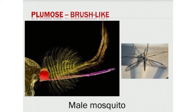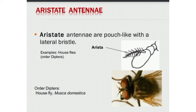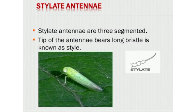Next is pilose antennae, from the female mosquito. Next is aristate antennae, which are pad-like with a lateral bristle in the shape of an arista. Examples are house flies, from the order Diptera. Next is stylate antennae, which are three-segmented; the tip of the antennae bears a long bristle known as the style.